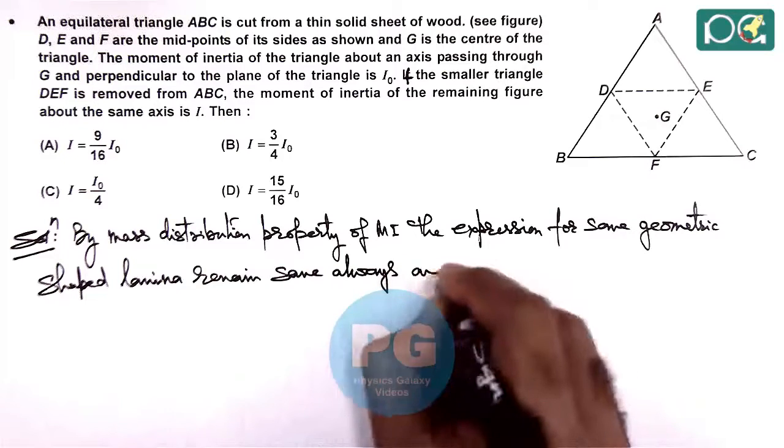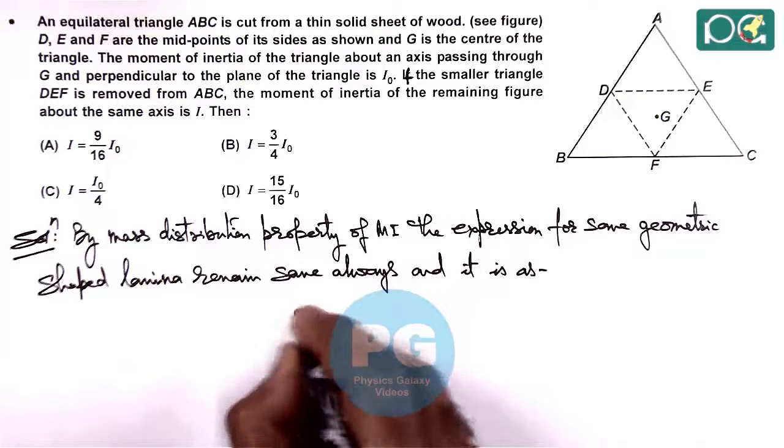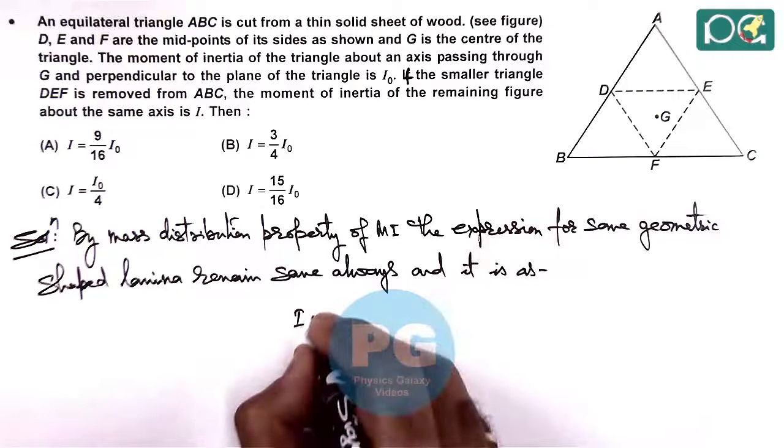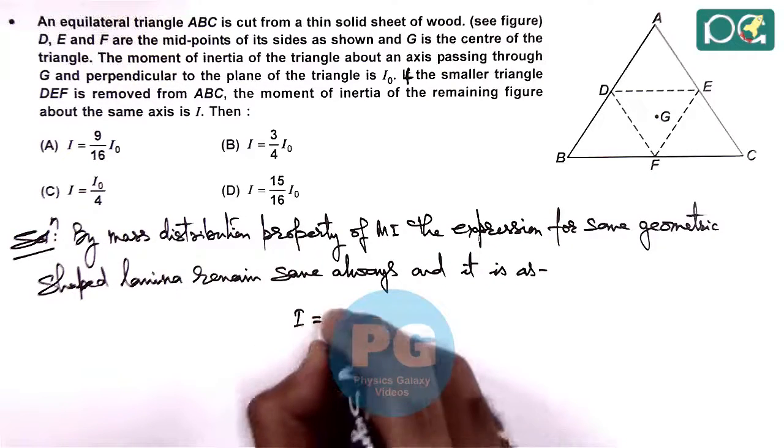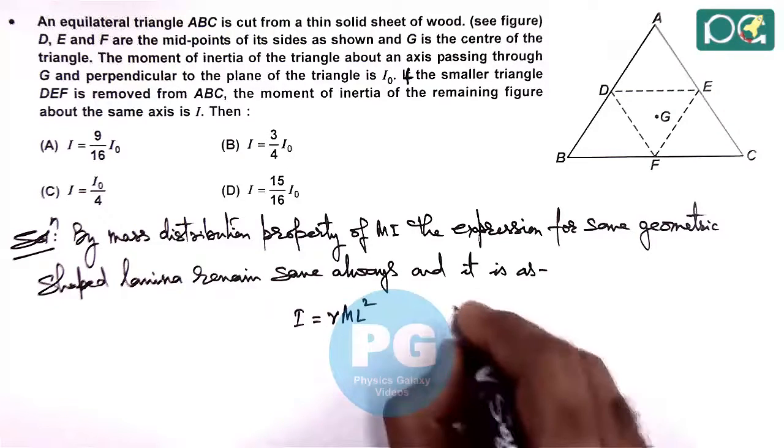And we know it is given as, here we can write the moment of inertia of a triangular lamina as γML² where γ is a constant and L is the side of triangle.